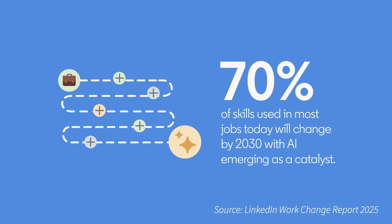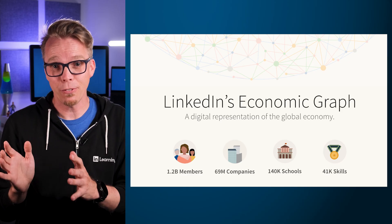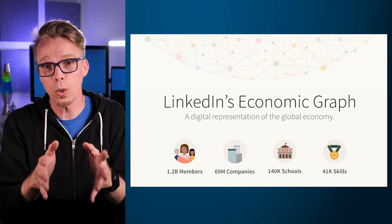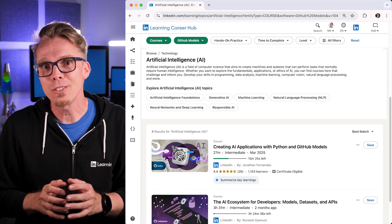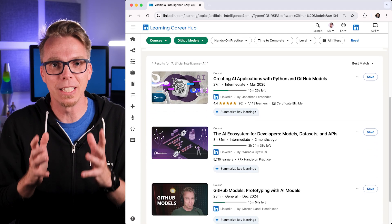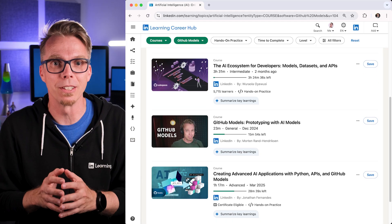Work is changing at the pace of AI, and by 2030, projections say up to 70% of AI skills will have shifted. LinkedIn's Economic Graph identifies which skills matter to your industry and your role, and LinkedIn's courses integrated with GitHub Models give you what you need to build those skills today.